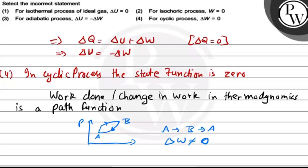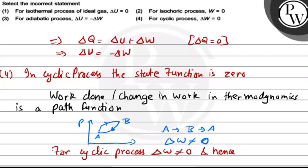So our final answer is that for cyclic process, delta W is not equal to zero, and hence option four is the correct answer. We have to select the incorrect option and we know that delta W is not equal to zero. I hope you understand it well, best of luck.